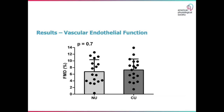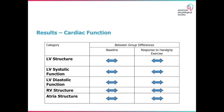Turning our attention to the results from our FMD test, we can see that there were no differences between cannabis users and non-users. Finally, we can see that left ventricular structure, systolic and diastolic function, as well as right ventricular and atrial structure do not differ between cannabis users and non-users.